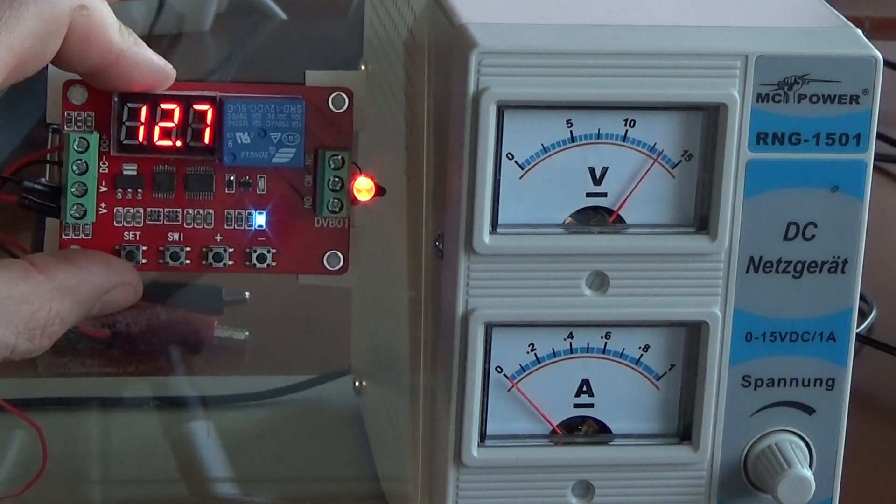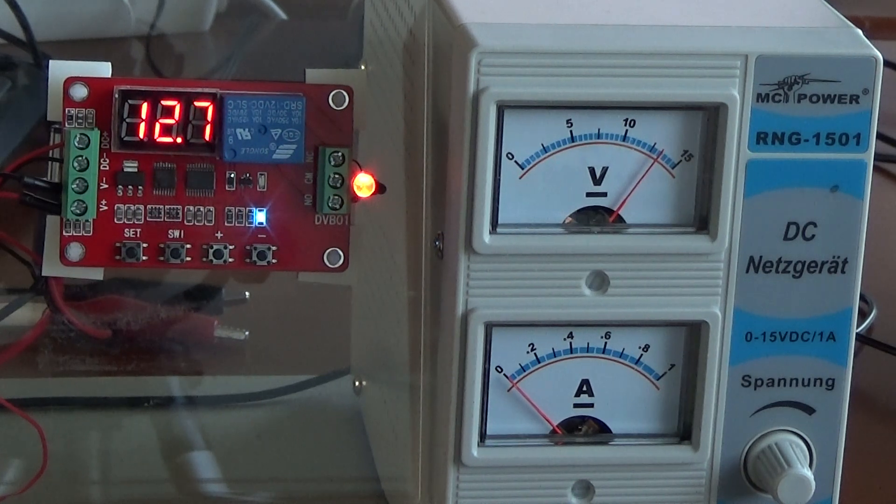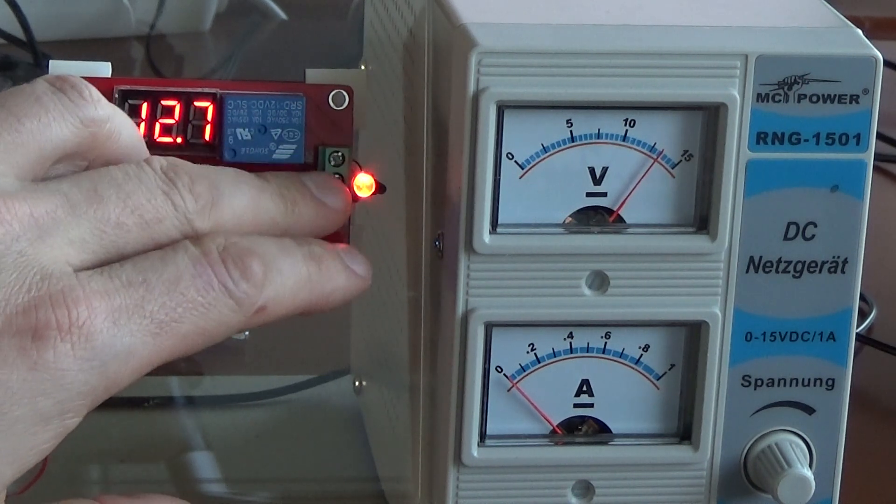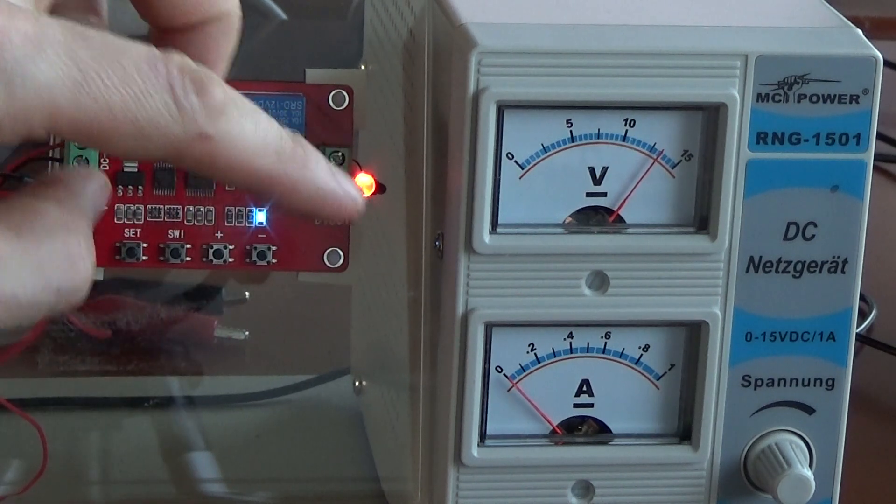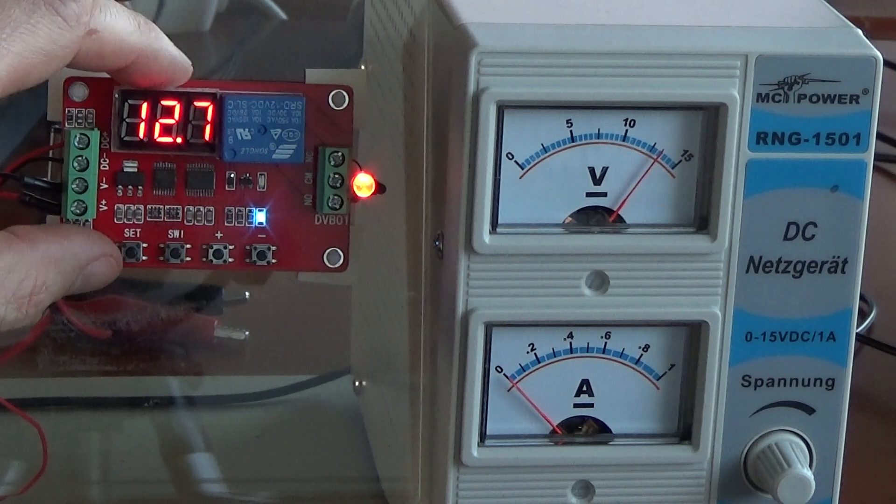This PCB is a voltage measuring device with a relay output. You can choose when the relay should activate and deactivate within what voltage upper and lower. It has five functions.